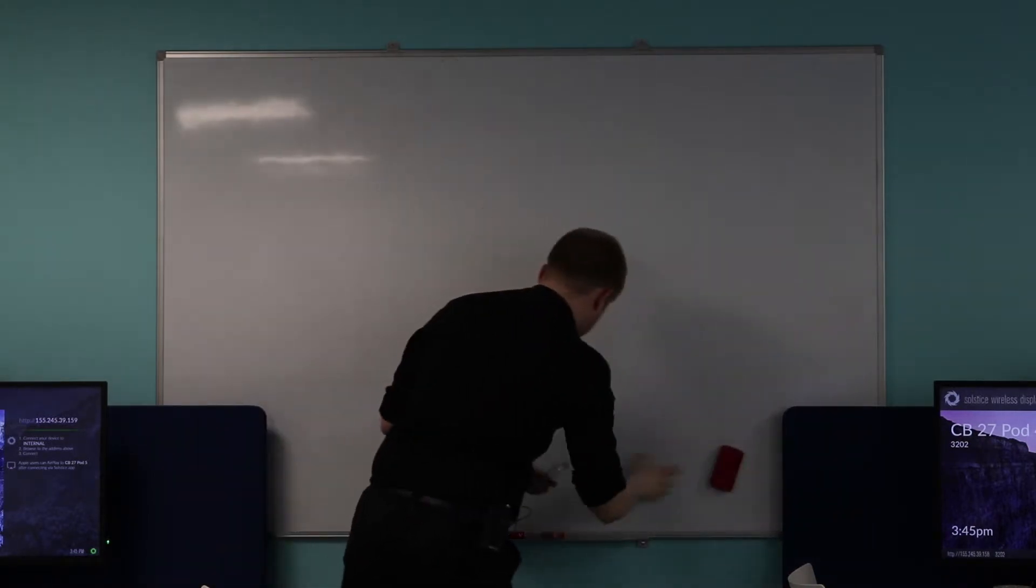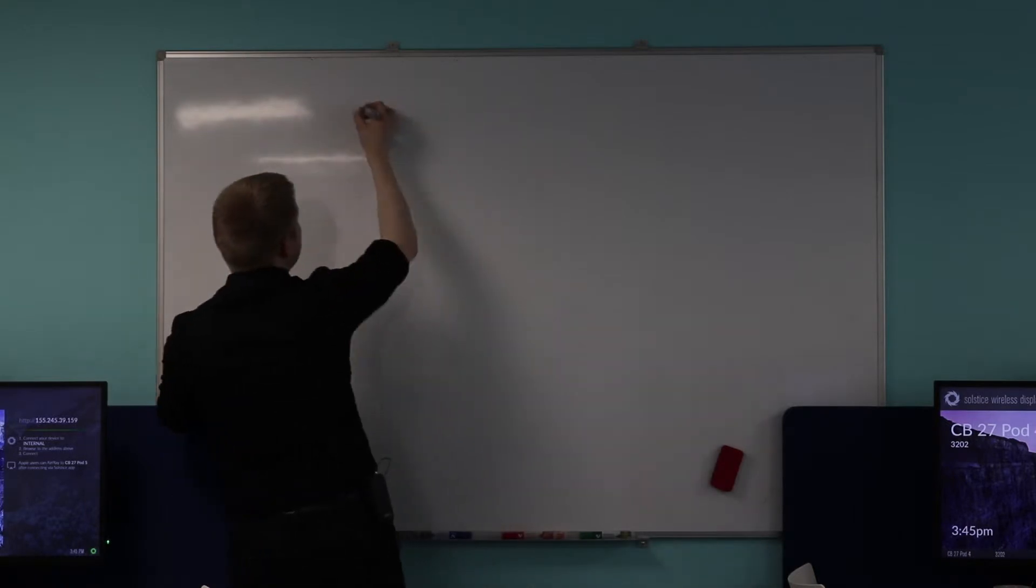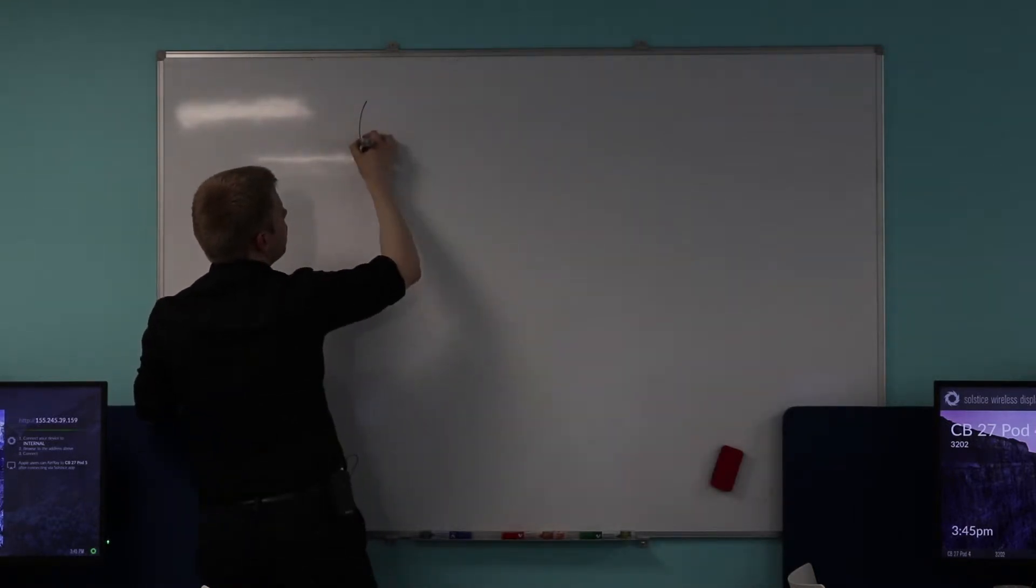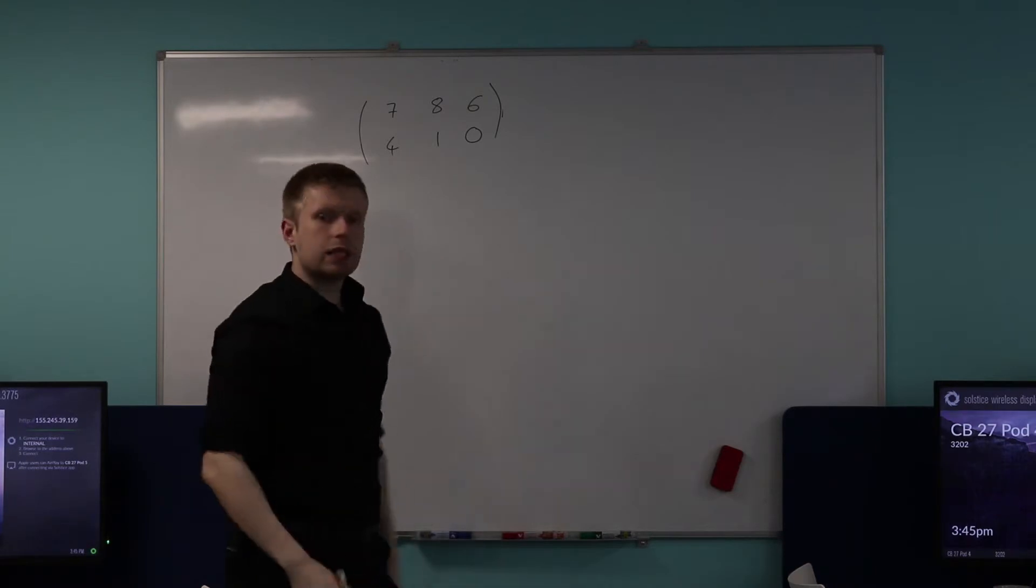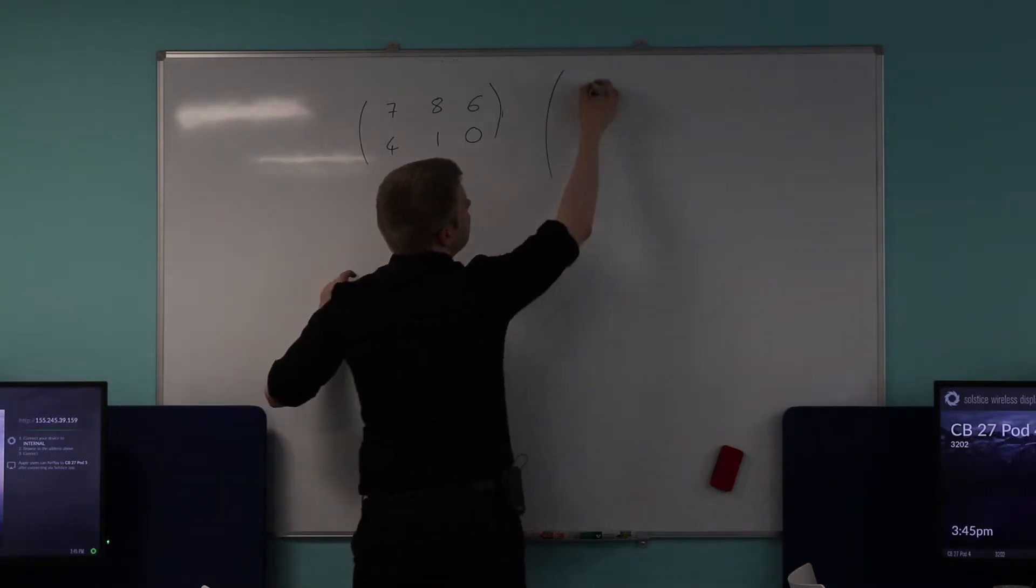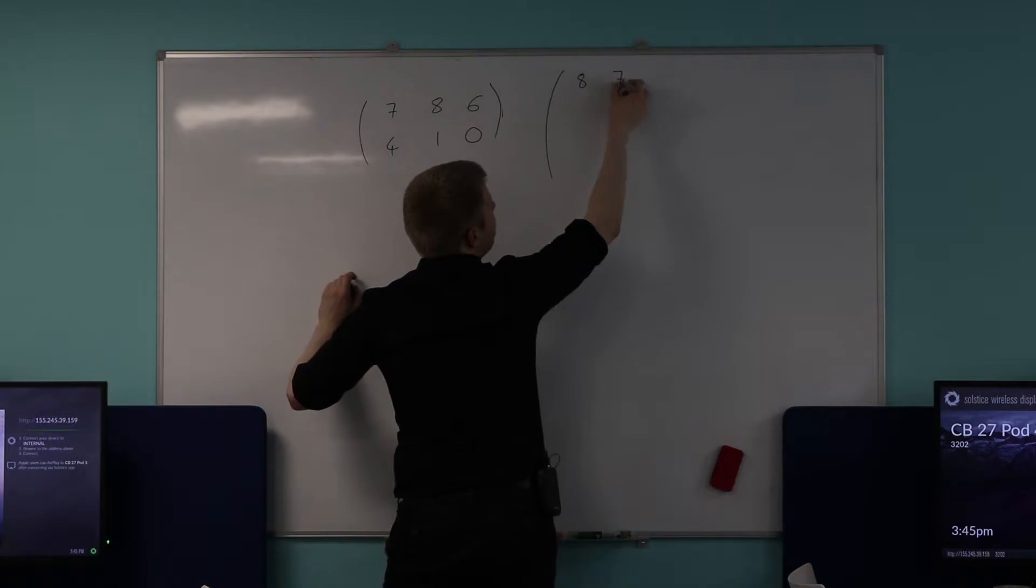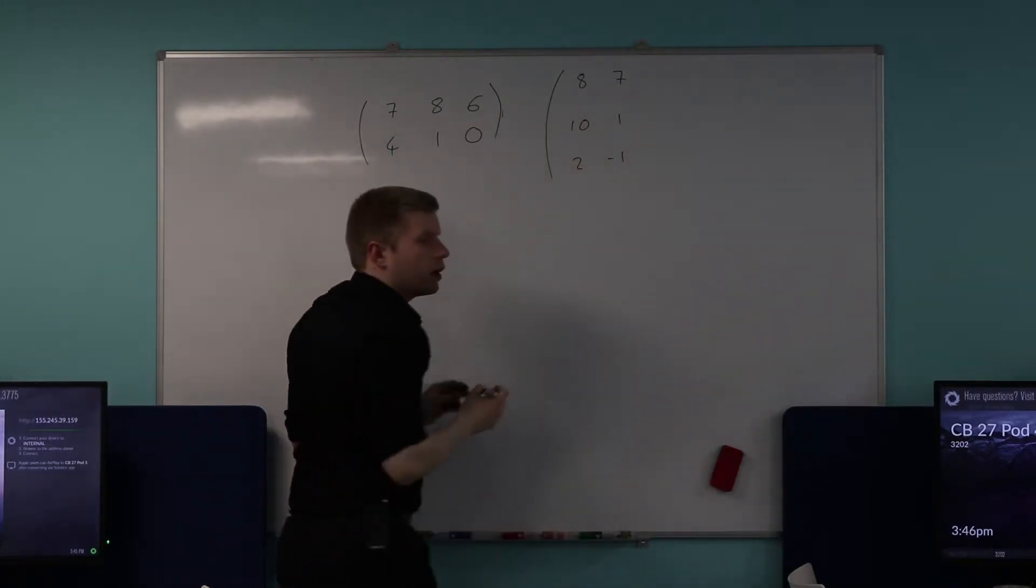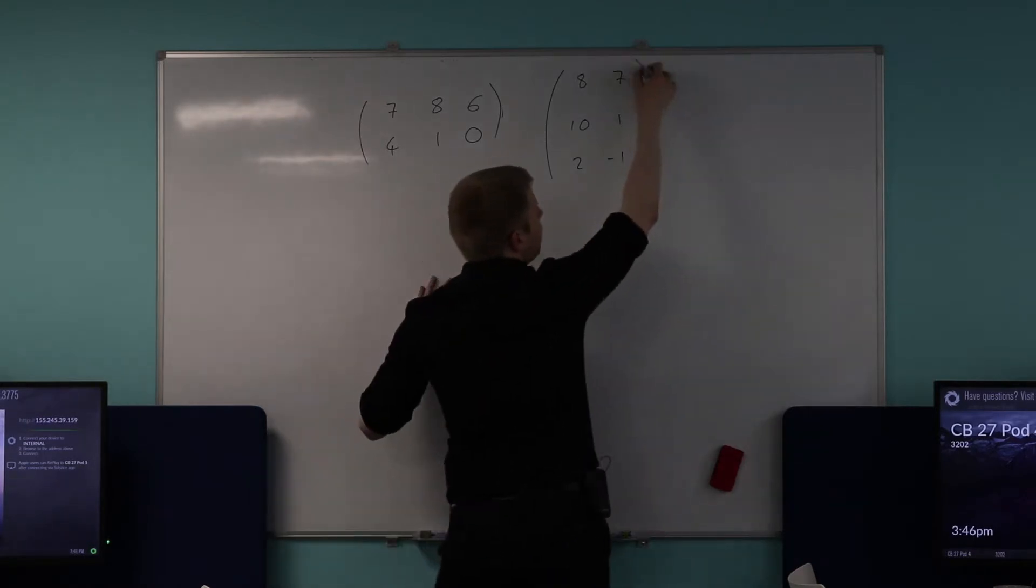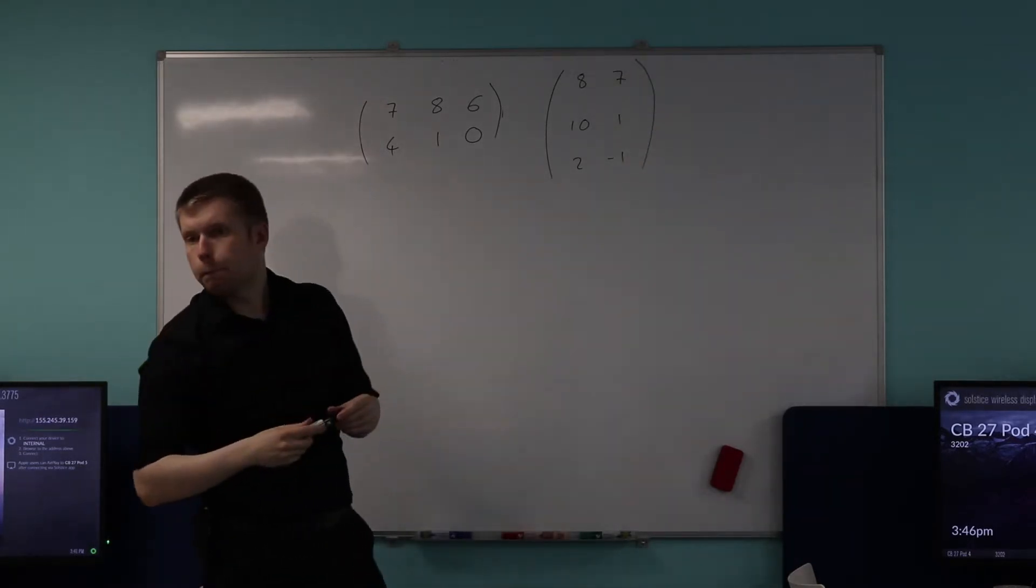Let's go through this one together. So let's suppose I give you a matrix that looks like this. So let's go seven, four, eight, six, one and zero. And then I'm attempting to multiply that with a matrix that looks like this. Let's go eight, seven, ten, one, two and let's stick negative one in there because there's nothing stopping me having negative numbers in my matrix as well.